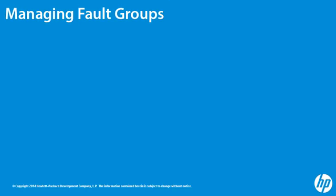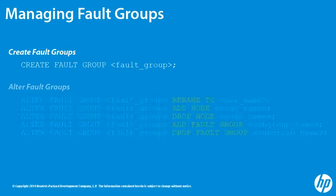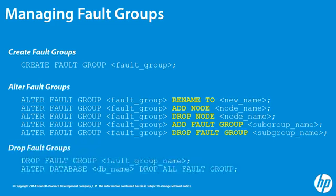In most cases, you'll use the Fault Group Generator script to manage Fault Groups. However, the SQL statements that the script generates are available to administrators who can use those statements to create, alter, and drop Fault Groups. You can also add and remove nodes to and from Fault Groups and add Fault Groups to Fault Groups. You'll more likely use these statements to edit existing Fault Groups if you need to.